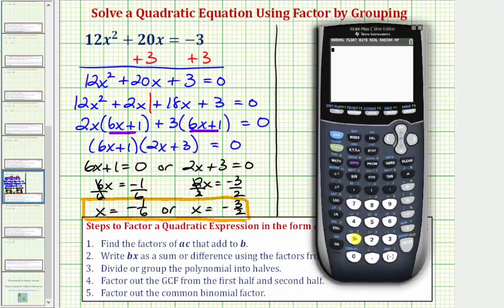So for x equals negative 1 sixth, we'd have 12 times negative 1 sixth squared plus 20 times negative 1 sixth. And notice how this is equal to negative 3, which verifies our first solution. And now we'll check x equals negative 3 halves. So we'd have 12 times negative 3 halves squared, and then plus 20 times negative 3 halves. And once again notice how this does equal negative 3, which verifies our two solutions are correct.